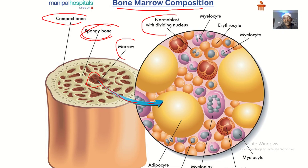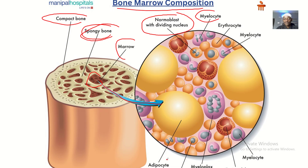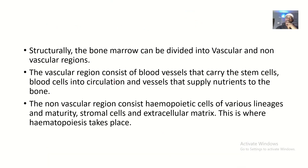We have the normal blast cells with dividing nuclei, we have the myeloblasts — basically all those cells that are growing up to become red blood cells, white blood cells, and lymphocytes. We also have adipocytes, which are the fat cells, and when the fat cells become so much, they form yellow bone marrow.